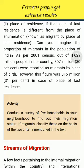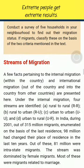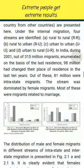Streams of Migration. Under internal migration, four streams are identified: rural to rural (RR), rural to urban (RU), urban to urban (UU), and urban to rural (UR). In India, during 2001, out of 315 million migrants enumerated on the basis of last residence, 98 million had changed their place of residence in the last 10 years. Out of these, 81 million were intrastate migrants, and this stream was dominated by female migrants, most of whom were migrants related to marriage.